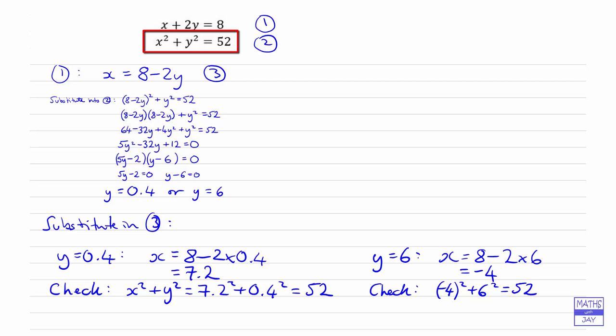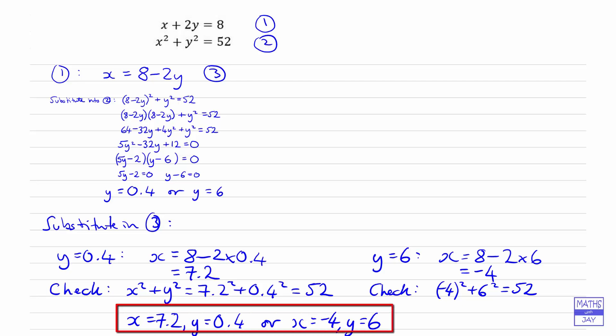We've found that both of our solutions are correct. So either x is equal to 7.2 and y is equal to 0.4, or we've got the pair x is minus 4 and y is equal to 6.